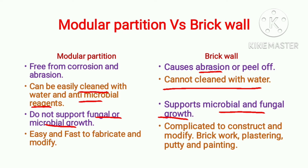The last point is that modular partitions are very easy and fast to fabricate and modify. We can easily modify modular partition walls within a very short time. Whereas brick wall construction and modification is a complicated process — it requires brick work, then plastering, then putty, then painting — all of which are tedious and time-consuming. Brick walls are time-consuming and their cost is also higher compared to modular partition.